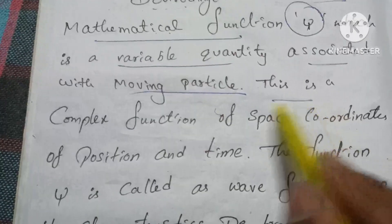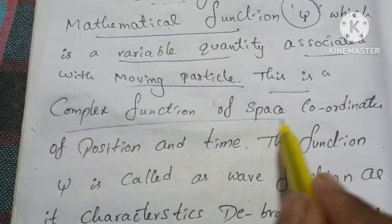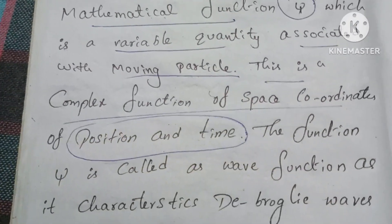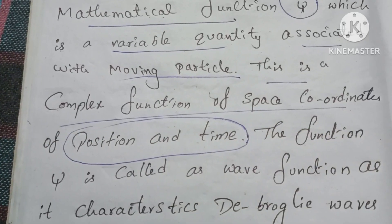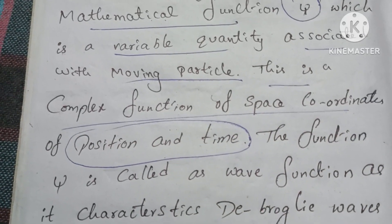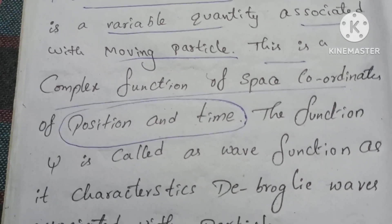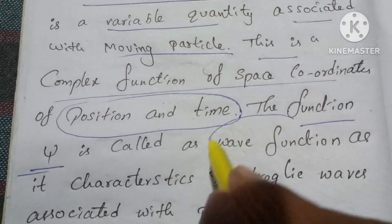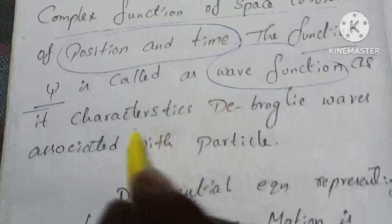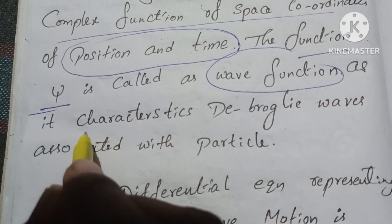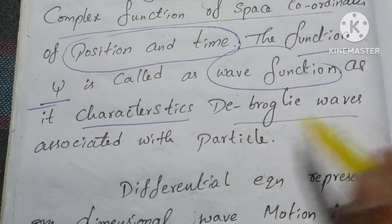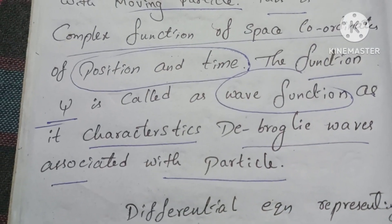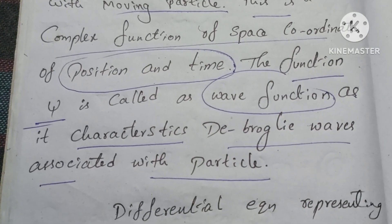This is a complex function of space coordinates, position and time. The function ψ (psi) — its name means wave function. As its characteristic, de Broglie's waves are associated with particles. This is a wave function associated with particles.